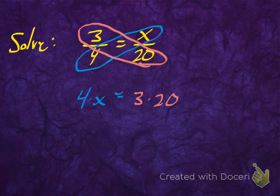Those are the cross-products. 4x is one cross-product because it's the diagonal. Cross means diagonal. So it's the product of the things that are diagonal in the proportion. That's all there is to it.